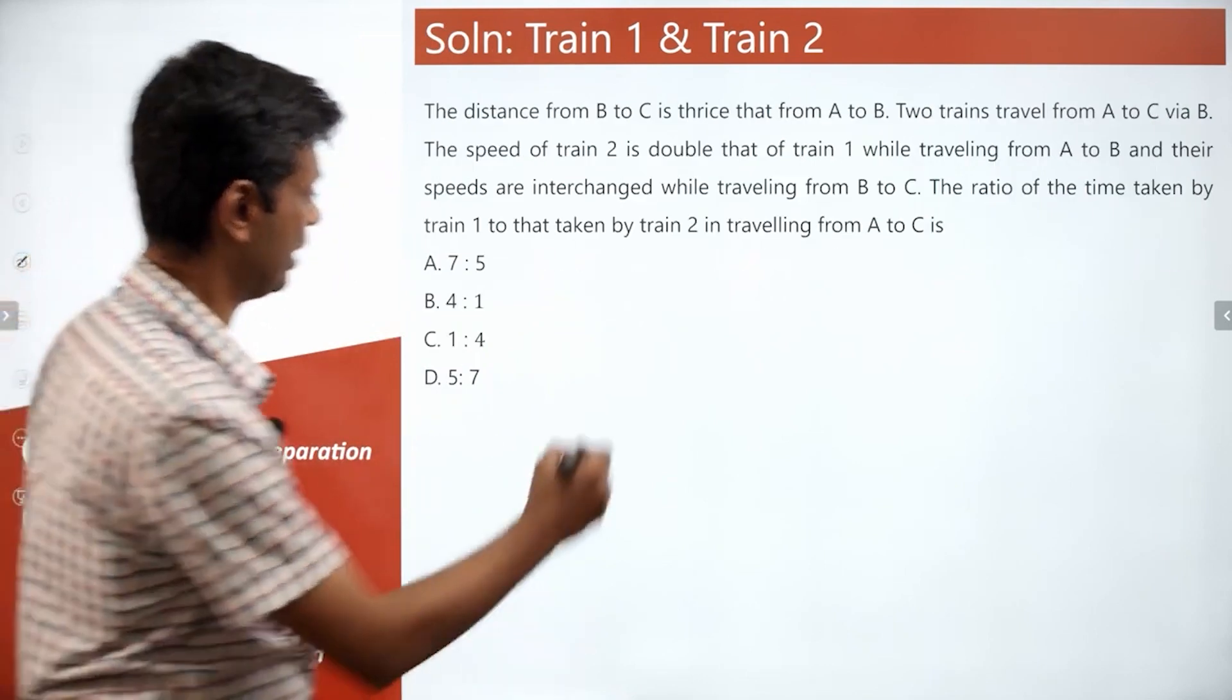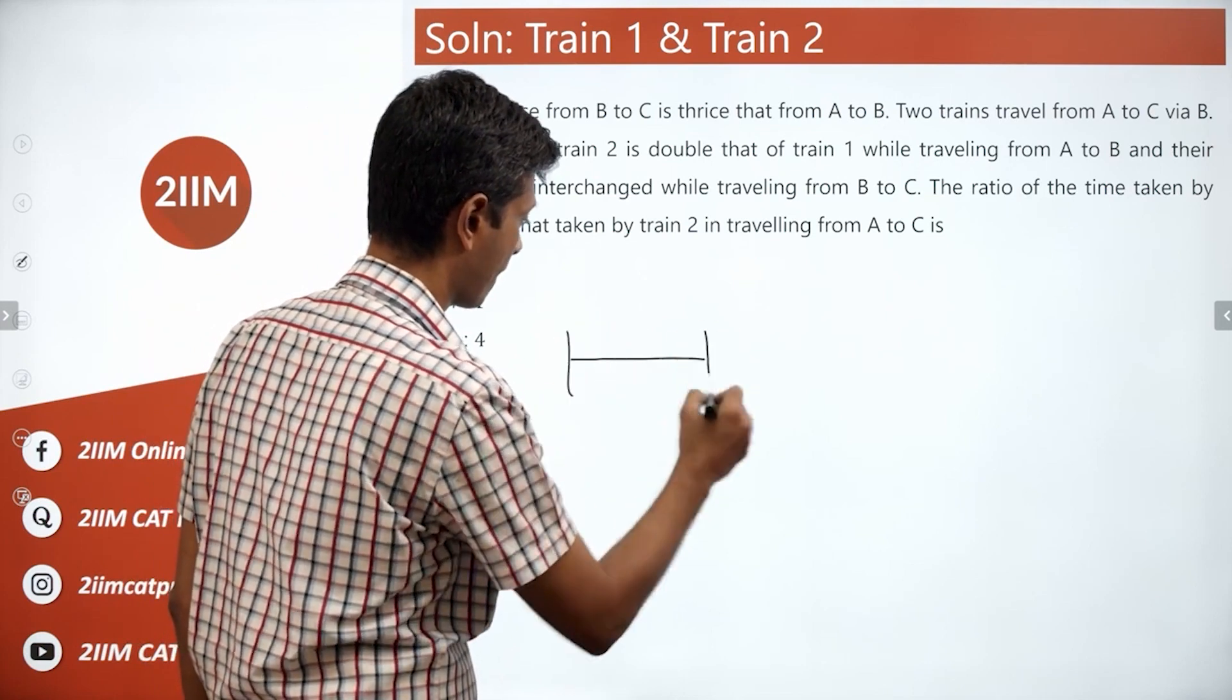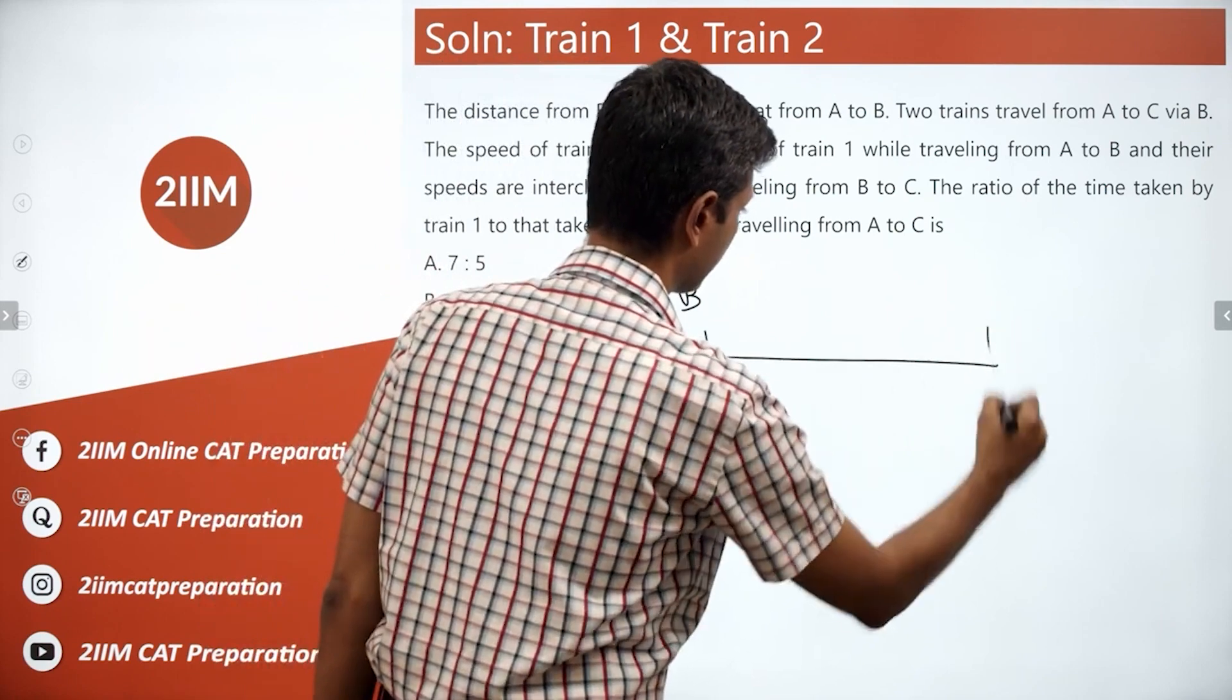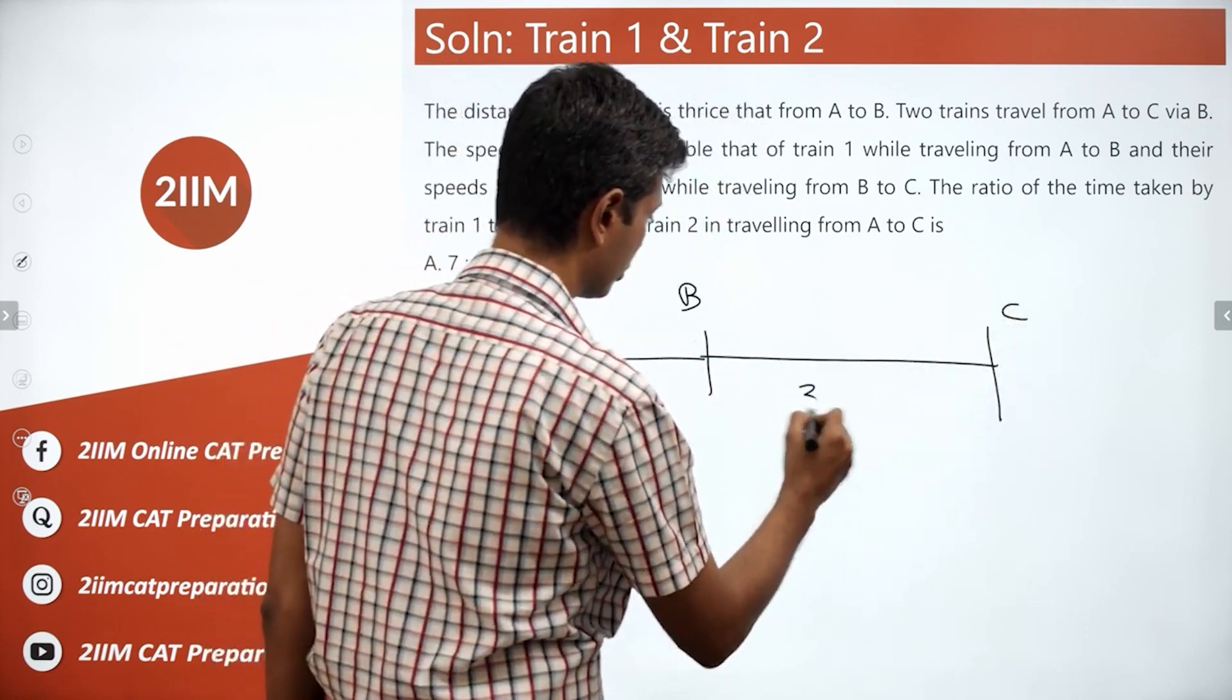Let's try that from A to B. So, A, B, C. Distance where D, this distance is 3D.